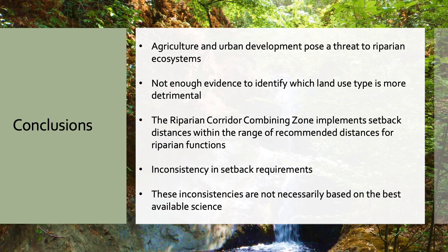In conclusion, I found that agriculture and urban development pose a threat to riparian ecosystems. Both land use types influence streambank erosion, facilitate poor water quality, alter native riparian vegetation, and threaten riparian wildlife. However, there isn't enough evidence to identify which land use type is more detrimental than the other. Comparing the Riparian Corridor Combining Zone Ordinance to scientific recommendations, it was found that the ordinance implements setback distances within the recommended range for some riparian functions; however, the setback distances either fell within the lower range of recommendations or did not meet the optimal width to achieve certain riparian functions.